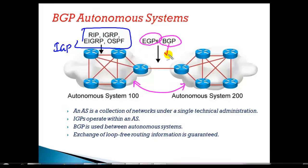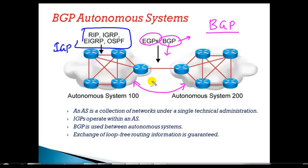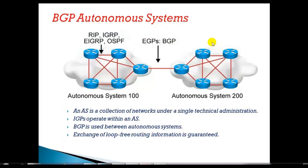The only protocol running on the internet which allows you to exchange routes between two or more different autonomous system numbers is BGP. BGP is the only protocol running in the internet backbone, majorly responsible for maintaining and exchanging routes between different autonomous systems. Service providers use BGP to control all routing information. BGP is the only protocol designed for the huge internet network.